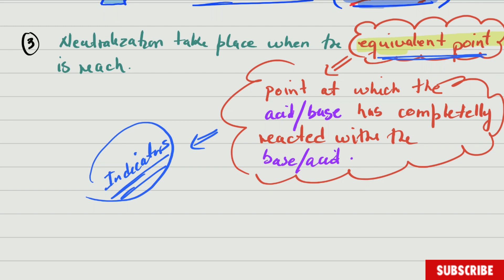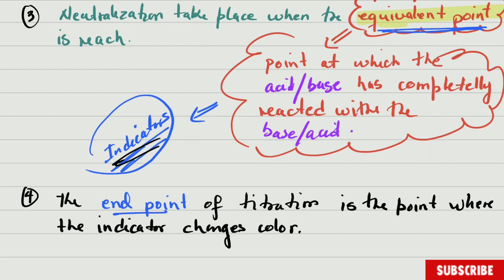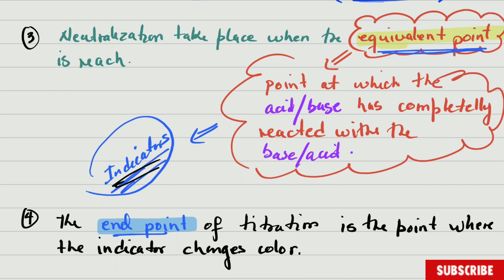We're going to speak about indicators just now. But before that, the fourth important thing: the end point of titration is not the same as the equivalence point — be careful. The equivalence point is when the acid or base has completely been neutralized. We determine that by the end point of the indicator. The end point of titration is when the indicator has changed color. When the end point is reached, titration is done.